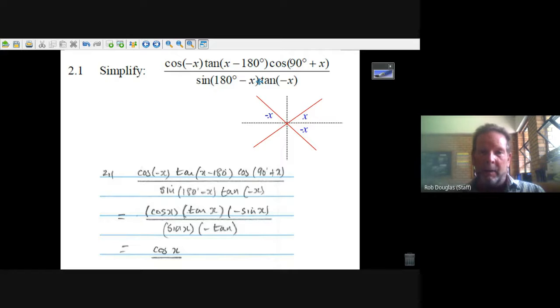Now, 180 minus X. That's an easy one. 180 and then you bend clockwise up, you're in the second quadrant. Sine's positive there. So the sine of 180 minus X is the same as the sine of X.